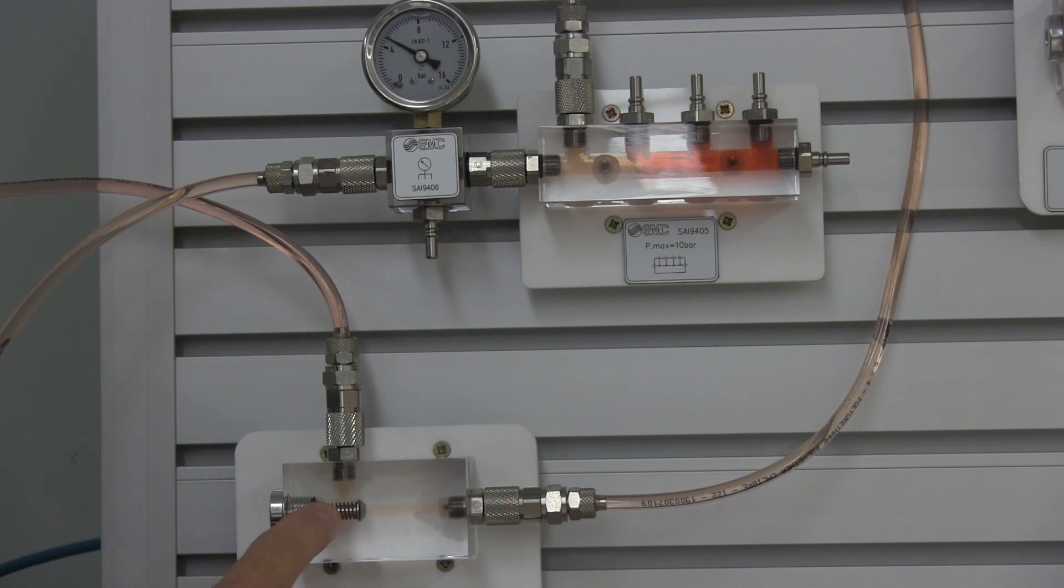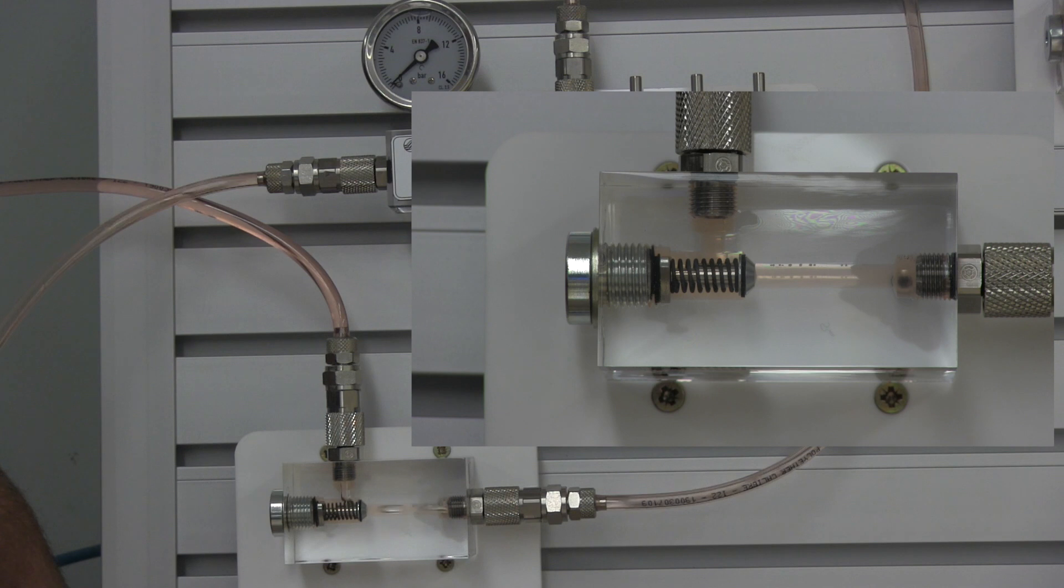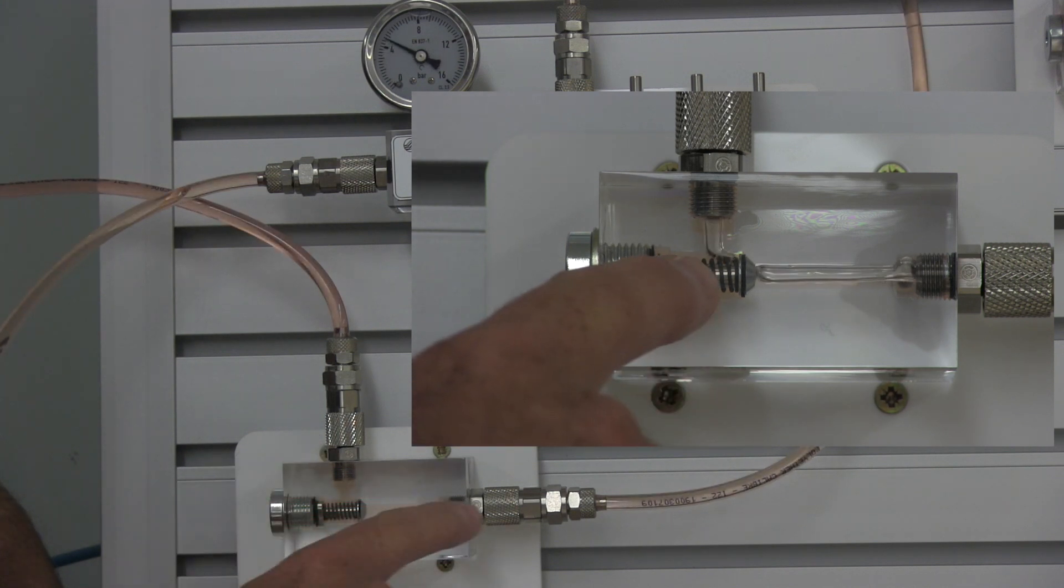I'm going to inject a little bit of air so you can see that the oil is flowing. You can see here that the oil is flowing from the A port to the B port.